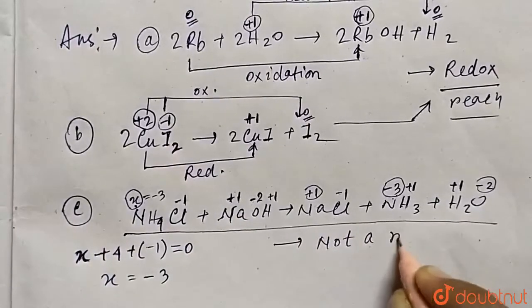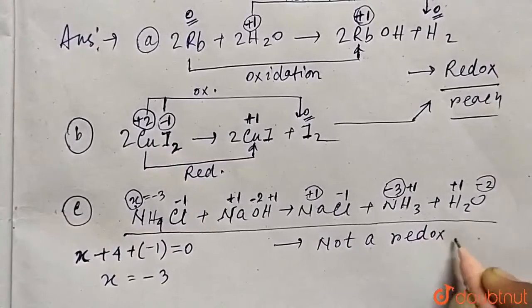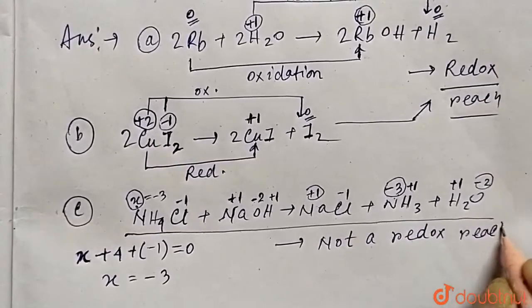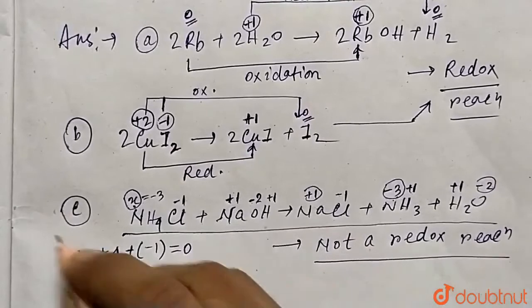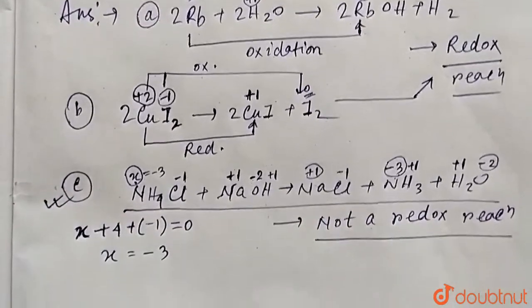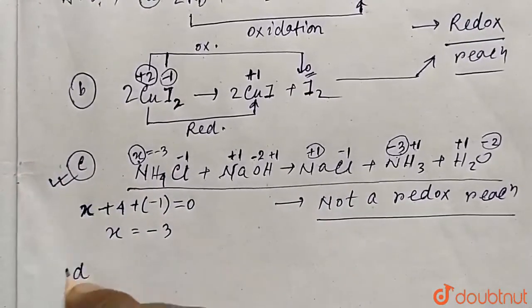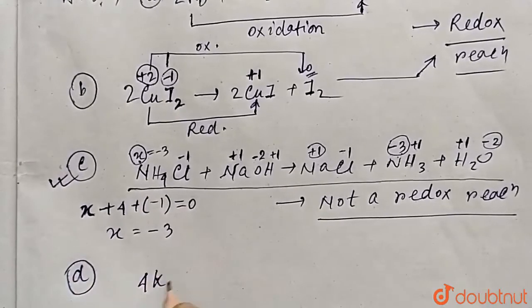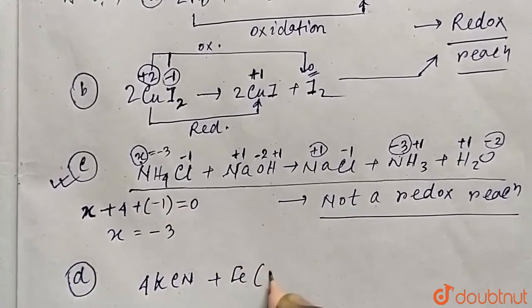We can confirm that option C is not a redox reaction and is a correct answer. Now let us focus on reaction D: K₄Fe(CN)₆ reacting to form ions.